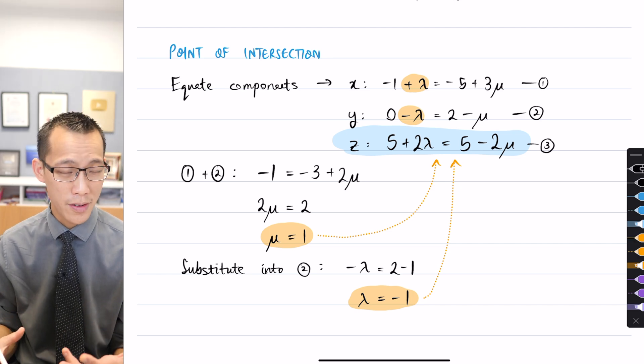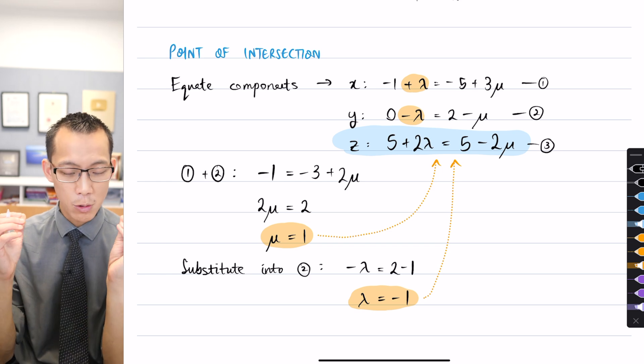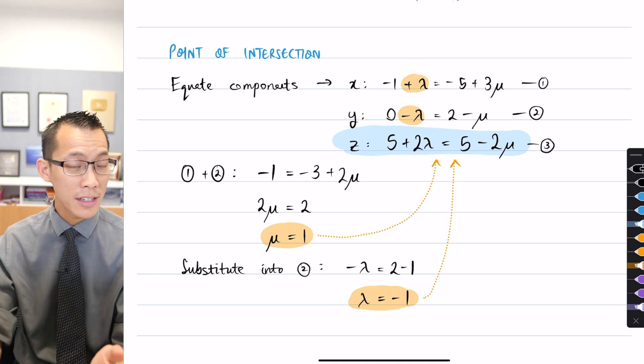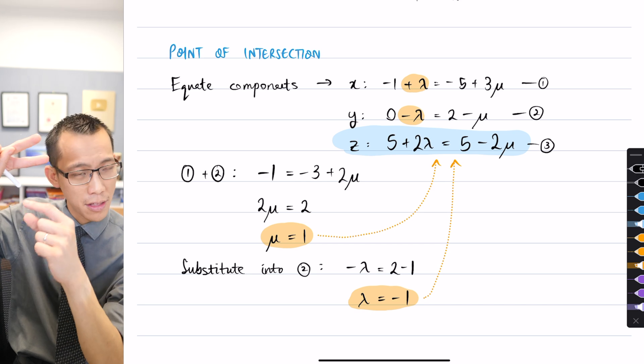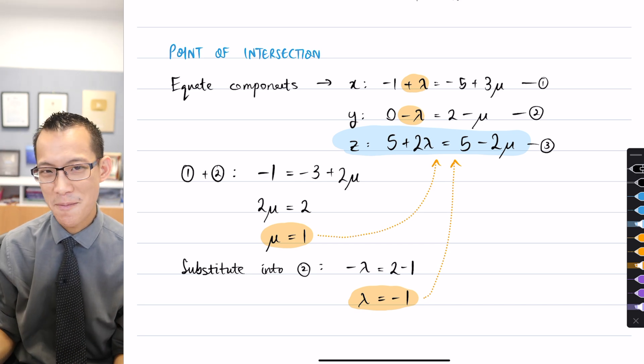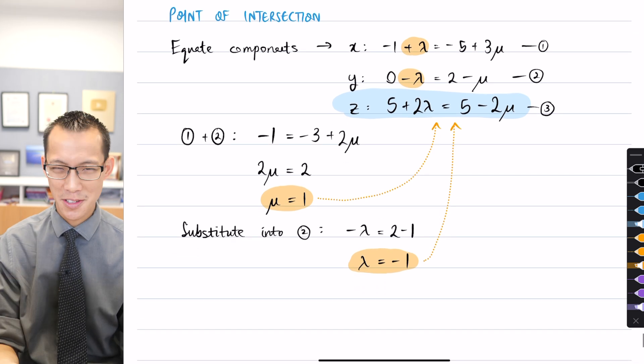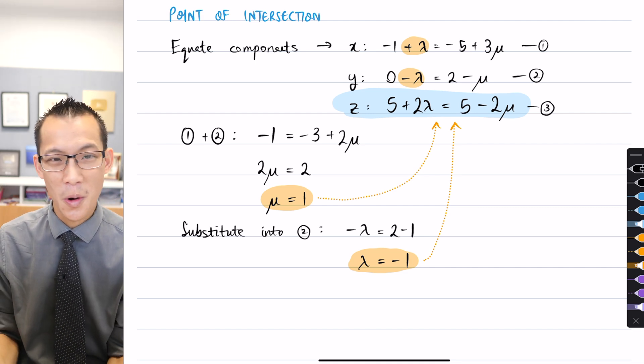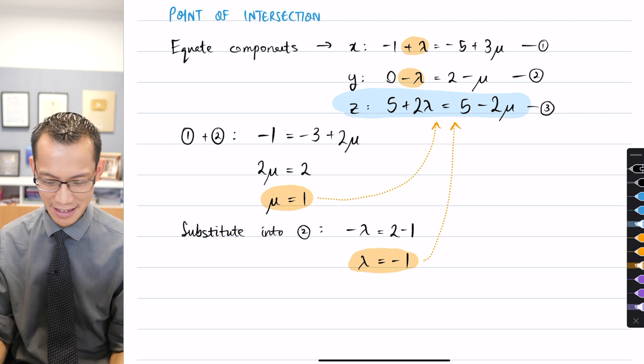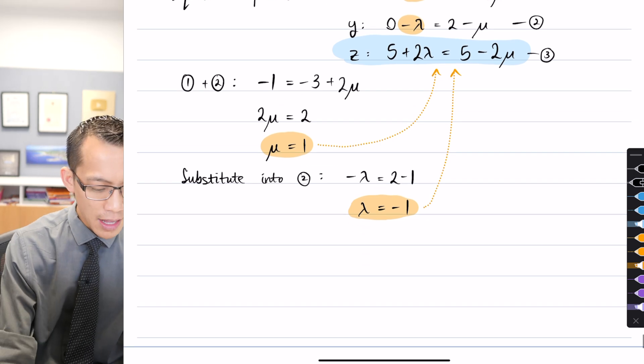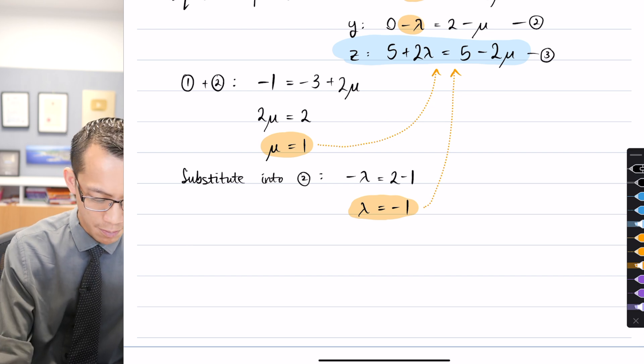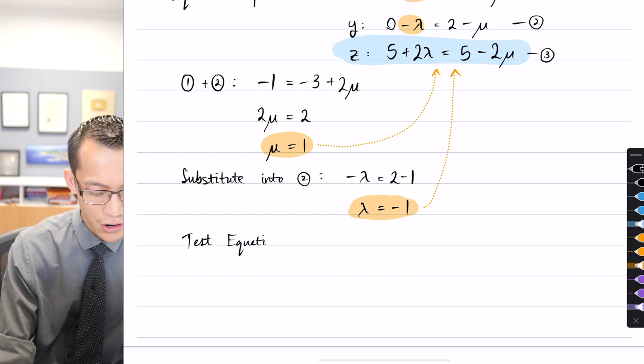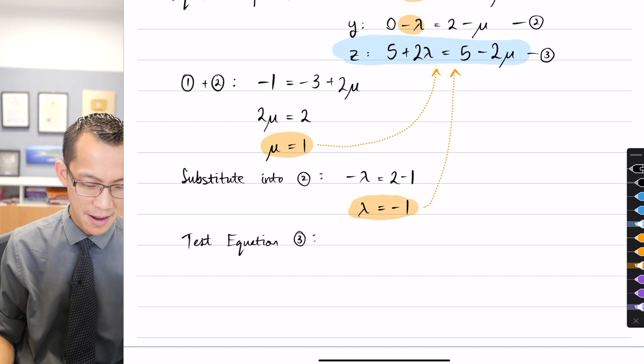Now if I do have a point of intersection, the equation should work, right? It should satisfy all three. But if there is no point of intersection, then what will happen is I'll try to put it into the third equation and it will break. It won't work. It satisfies two but not the third one. Now given that at this moment in time I don't know, here's what not to do. Don't just take the third equation and put in lambda and mu and let them equal to each other because you don't know. We don't know whether they're equal to one another or not. So what I'm going to do, here's the way I would write it. I would say I'm going to now test equation three because I don't actually know if I'm going to satisfy it or not.